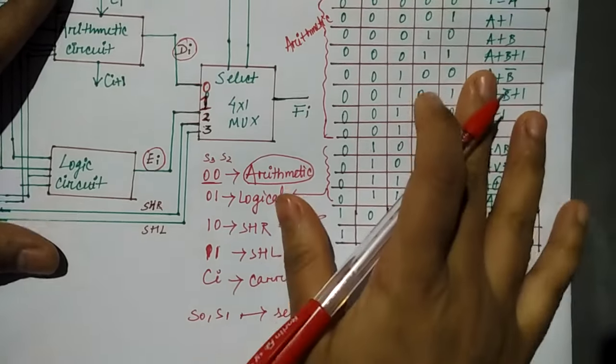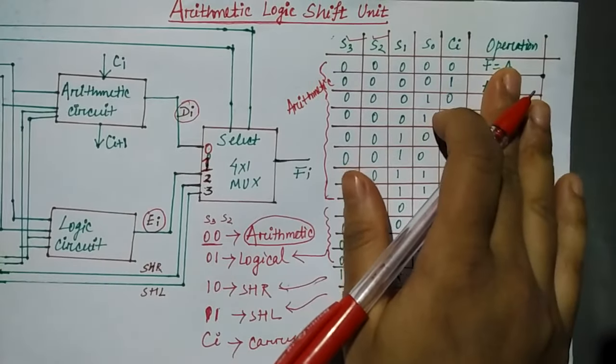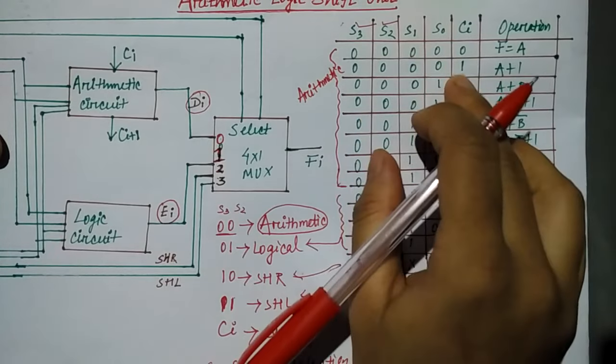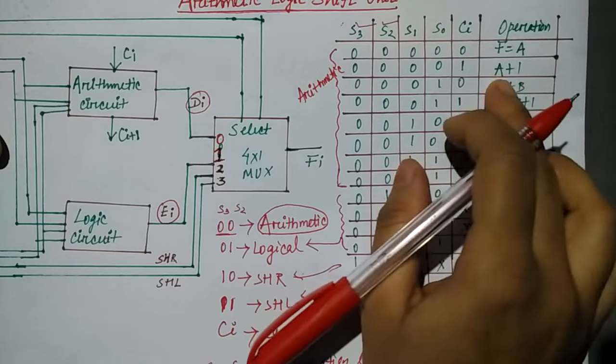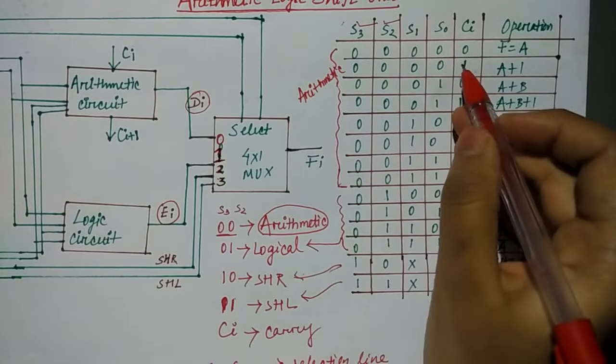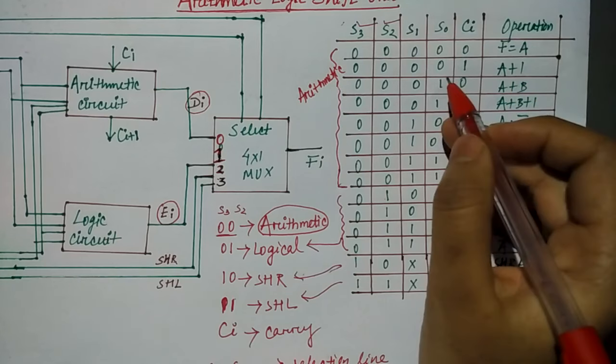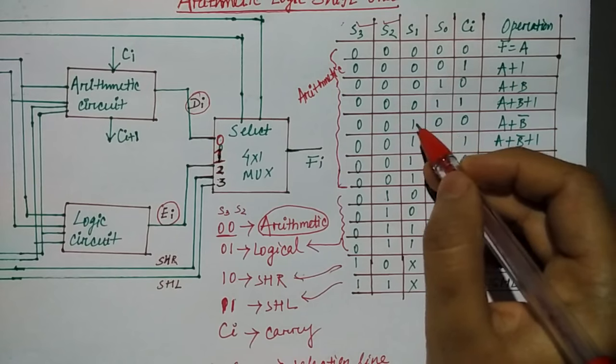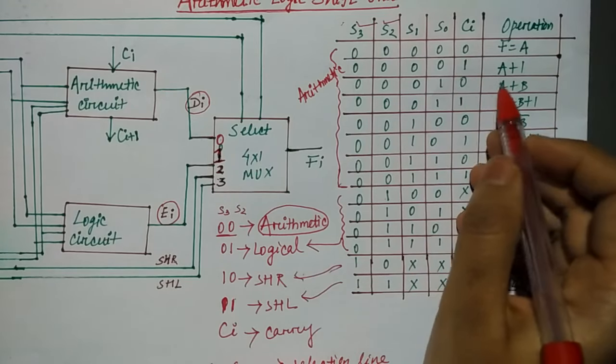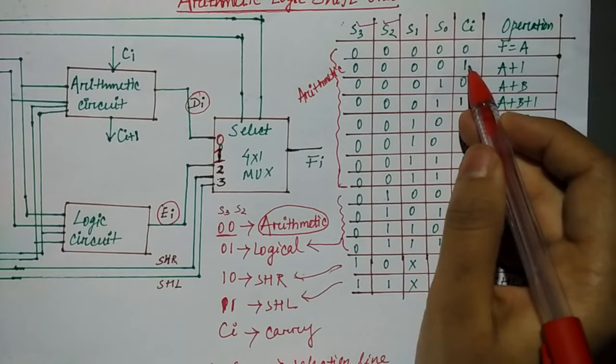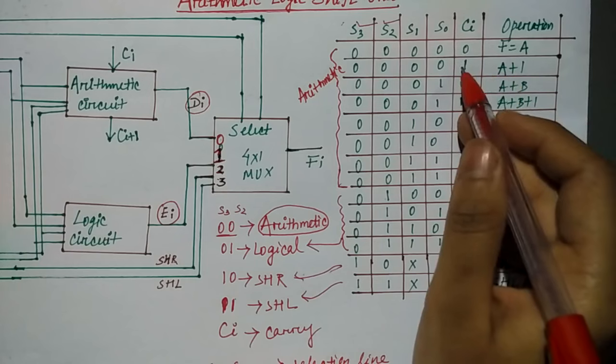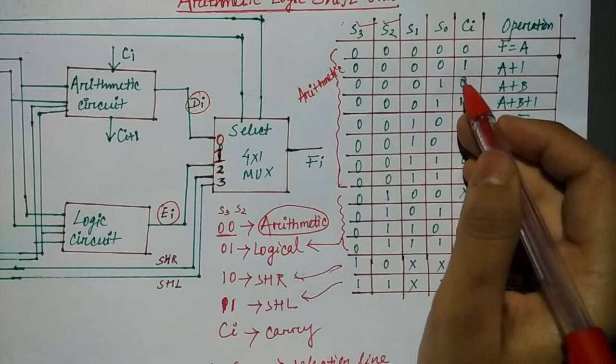Now we will see what function. For all 0, F is equal to A. If carry value is 1, then A plus 1. If it's 0,1,0 then A. It will change. Then 1,1 then A plus B plus 1. If 1,0,0 then A plus A complement. Because if value of A is 0 then complement is 1. Then what is A plus B?